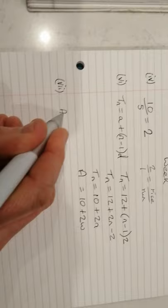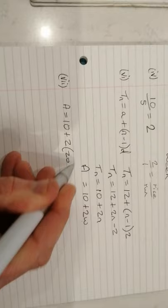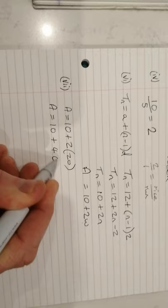So A is equal to 10 plus 2 times 20. So the amount that we'll have will be 10 plus 40, so the amount will be 50.